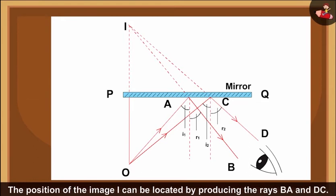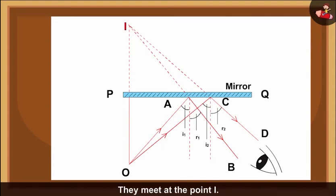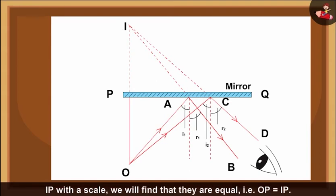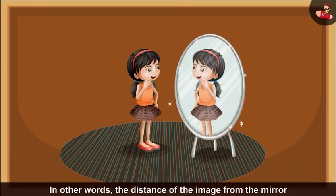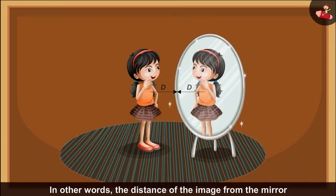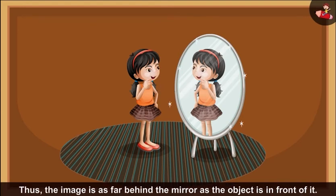The position of the image I can be located by producing the rays BA and DC. They meet at the point I. If we measure the distance OP and IP with a scale, we will find that they are equal, that is OP is equal to IP. In other words, the distance of the image from the mirror is equal to the distance of the object from it. Thus, the image is as far behind the mirror as the object is in front of it.